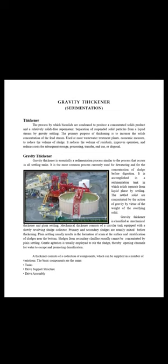A mechanical thickener consists of a circular tank equipped with a slowly revolving sludge collector. Primary and secondary sludge are usually mixed before thickening. The thickener consists of a collection of components which can be supplied in a number of variations.